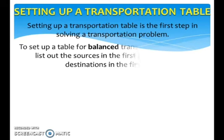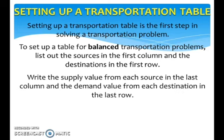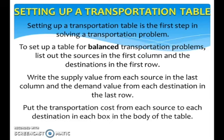To set up a table for balanced transportation problems, list out the sources in the first column and the destinations in the first row. Write the supply value from each source in the last column and the demand value from each destination in the last row. Put the transportation costs from each source to each destination in each box in the body of the table.